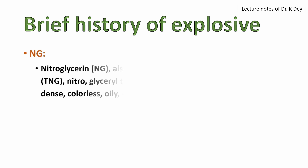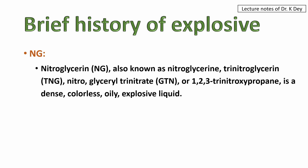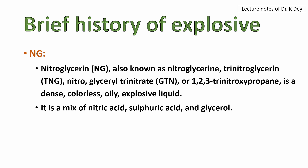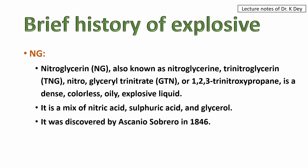Next is NG, also known as nitroglycerin — also called trinitroglycerin (TNG), nitroglyceryl trinitrate (GTN), or 1,2,3-trinitro-oxypropane. It is a dense, colorless, oily explosive liquid, consisting of a mix of nitric acid, sulfuric acid, and glycerol. You should remember the compounds in explosive mixtures and the terms — NG means nitroglycerin, etc. The terms are important; the history is provided for reference. Nitroglycerin was discovered by Ascanio Sobrero in 1846.